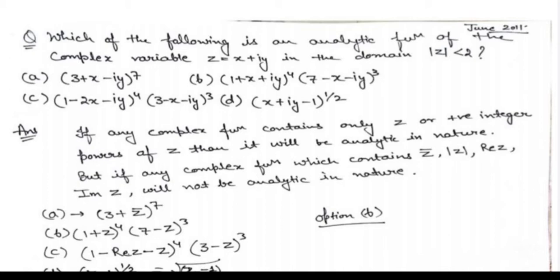In this question, which has been asked in a previous year CSIR NET physics exam, the question is: which of the following is an analytic function of complex variable z = x + iota y in the domain |z| < 2? Here are the options — we need to check which of the following is an analytic function.